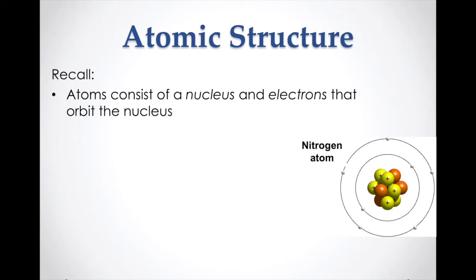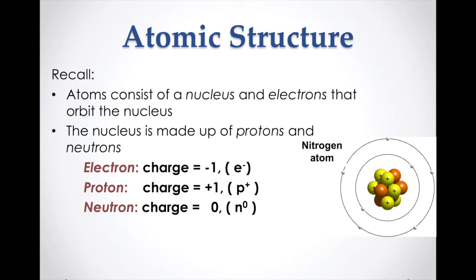Here is a Bohr-Rutherford diagram — in this case we have a nitrogen atom. The yellow in this diagram represents the protons, the orange balls represent the neutrons, and surrounding them in white are the electrons. The different particles that make up the atom have different electrical charges: the electron has a charge of negative one, a proton has a charge of positive one, and a neutron is neutral with zero charge.